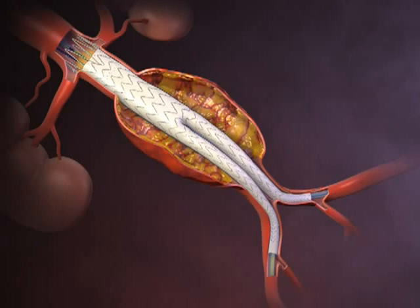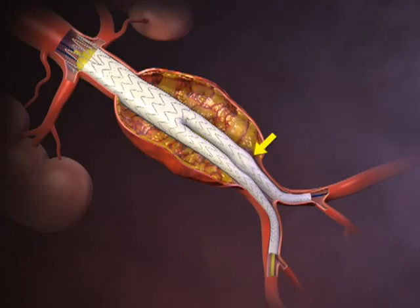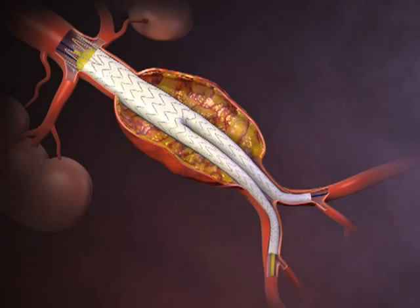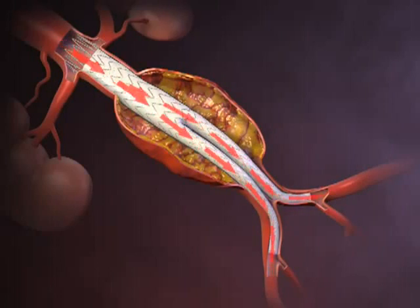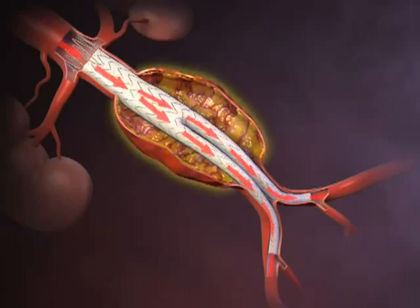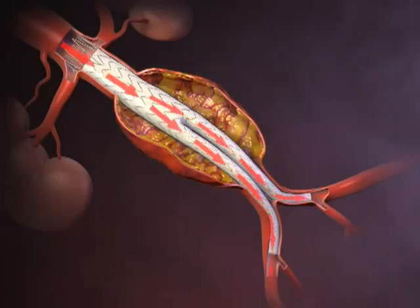A balloon is then introduced and used to expand all graft-to-vessel and graft-to-graft junctions in the proximal to distal direction to ensure a tight seal. Finally, the sheaths and guide wires are removed and the femoral arteries repaired. Aortic blood subsequently flows through the stent graft. Endovascular abdominal aortic aneurysm repair is intended to relieve further pressure on the aneurysm and reduce the risk of further dilatation or rupture.